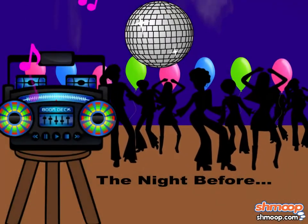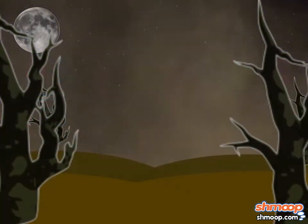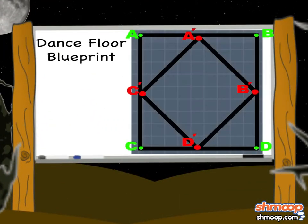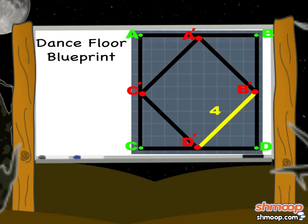Here's what the square looked like last night. The Lumberjack waltz requires there to be a distance of 4 between point B and point D.